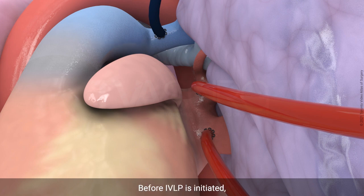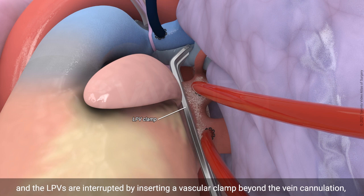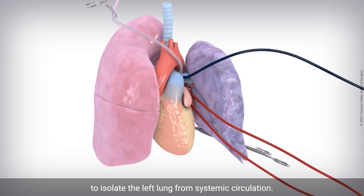Before IVLP is initiated, inflow is interrupted by tightening a tourniquet clamp on the proximal left pulmonary artery, and the left pulmonary veins are interrupted by inserting a vascular clamp beyond the vein cannulation, to isolate the left lung from systemic circulation.